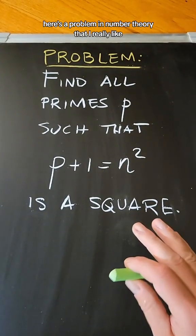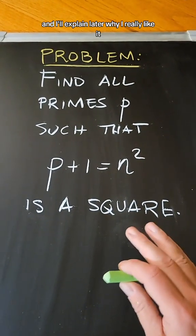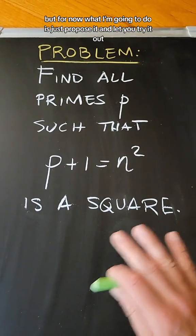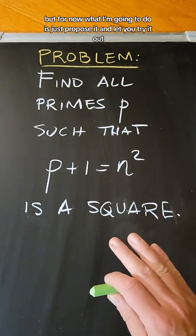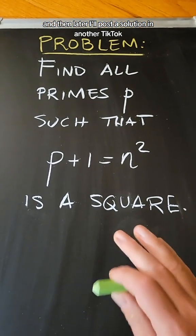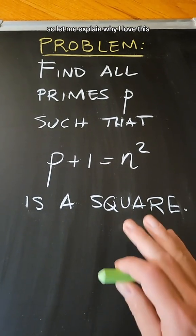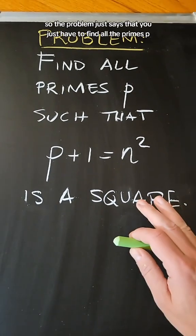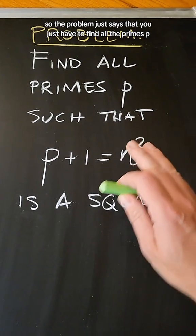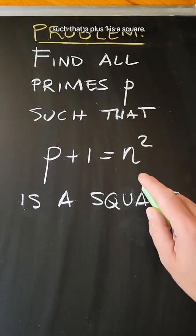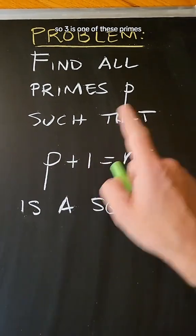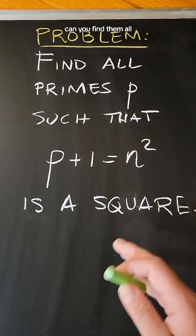Here's a problem in number theory that I really like. I'll explain later why I really like it, but for now I'm going to propose it and let you try it out, and then later I'll post a solution in another TikTok. The problem says: find all the primes p such that p plus 1 is a perfect square — the square of an integer. For example, 3 plus 1 is 4, so 3 is one of these primes. Can you find them all?